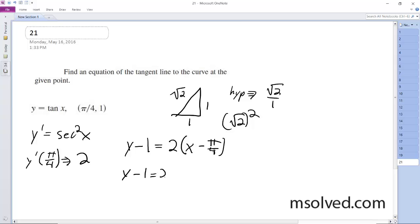So we get y minus 1 is equal to 2x minus pi over 2. Finally, y is equal to 2x minus pi over 2 plus 1. And that's our equation.